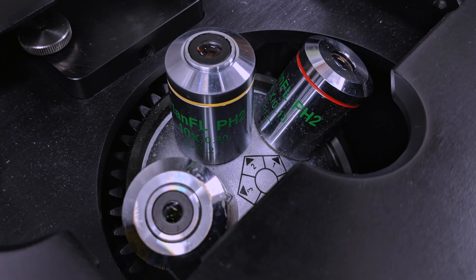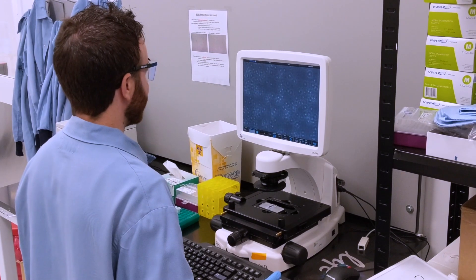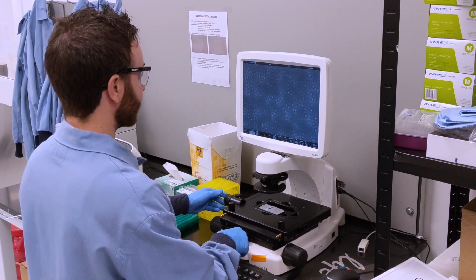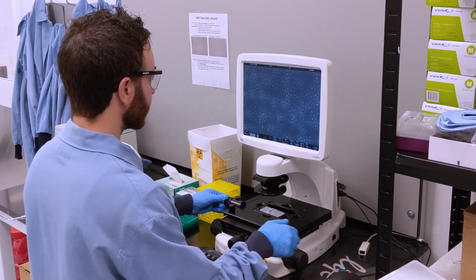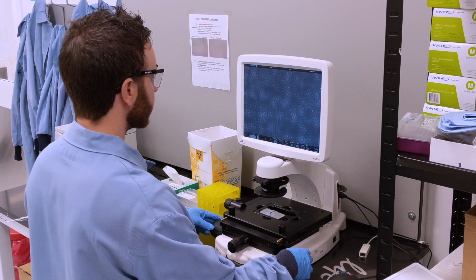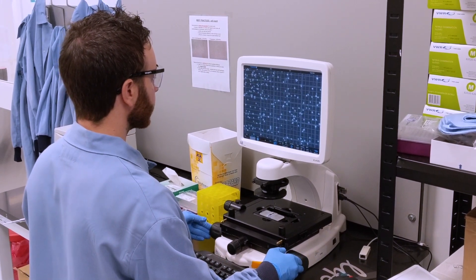Using the 10 times objective, look into the microscope to view the chamber of the hemocytometer containing the cellular suspension. Adjust the coarse focus knobs until you see grid lines come into focus.